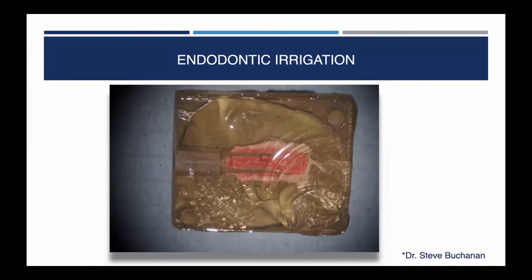You go down each canal — I typically go down each canal three times while activating. It takes about 10–15 seconds to remove the tip, and you're replenishing with hypochlorite as you go. For endodontic irrigation: there's an in vitro block created by Dr. Steve Buchanan — a piece of prosciutto simulating the pulp. I've used the laser for a while, but I wanted to know exactly what's going on inside the tooth. We'll look at that video towards the end of the lecture to see if the laser really works.